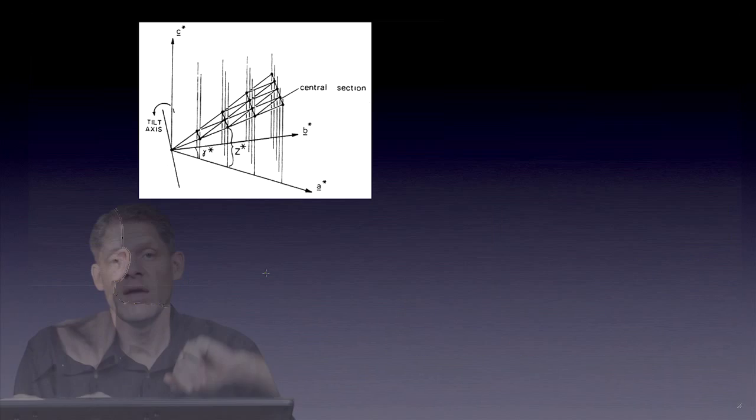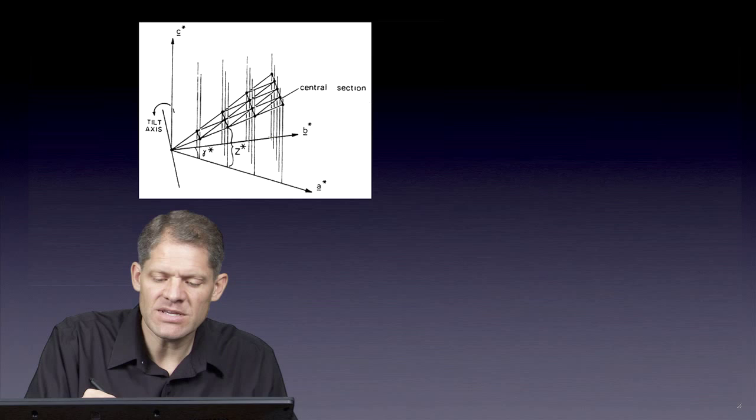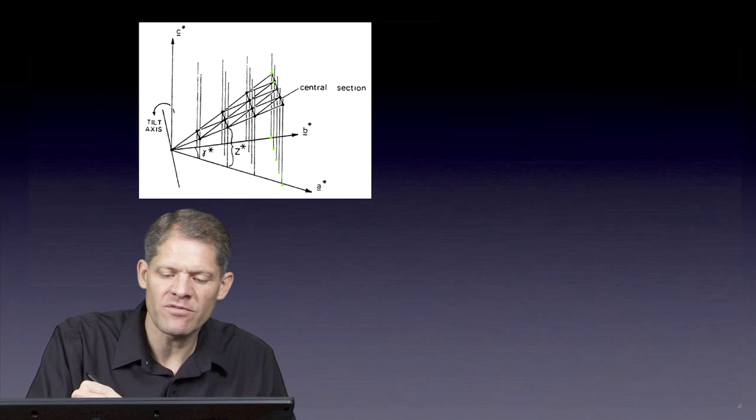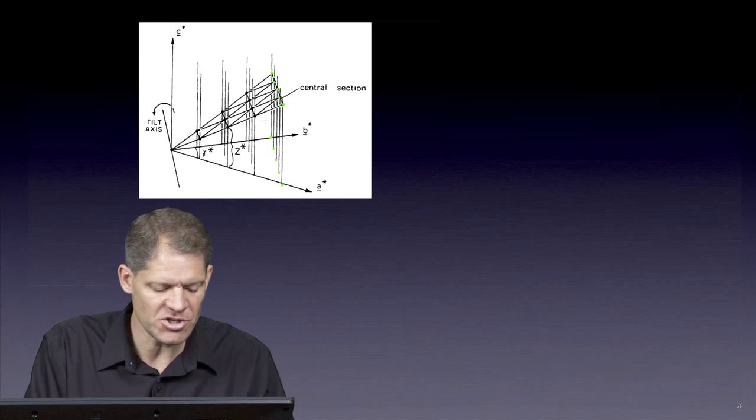The untilted images and diffraction patterns give us these amplitudes and phases here on the xy plane in reciprocal space. And all the tilted images give us measurements of amplitude and phase along the lattice lines in some other position.